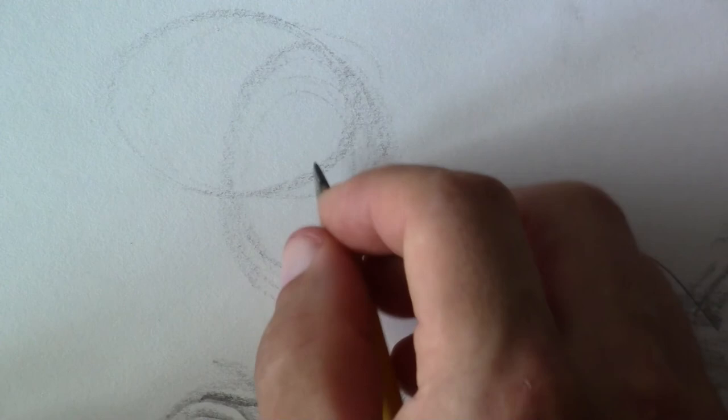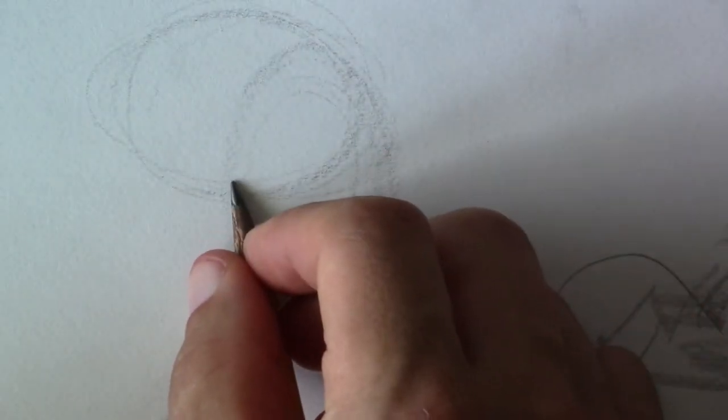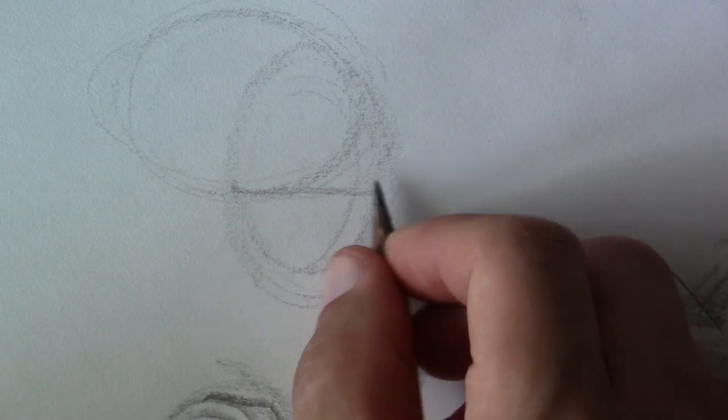Now, we're going to look at the jaw in profile. So, let's take the head that we learned how to draw in proportion before from the side view. If you remember, we had two eggs, if we're looking at a profile of the head. We have two eggs of the same size.